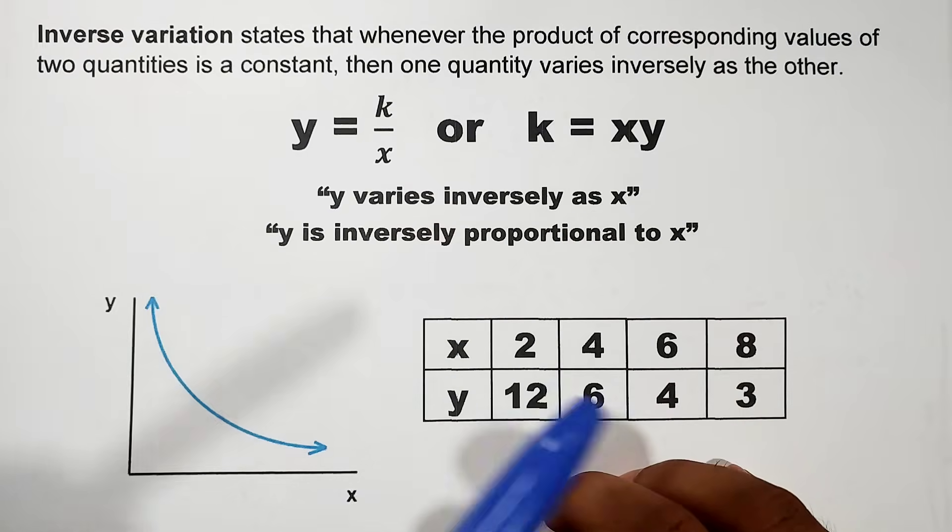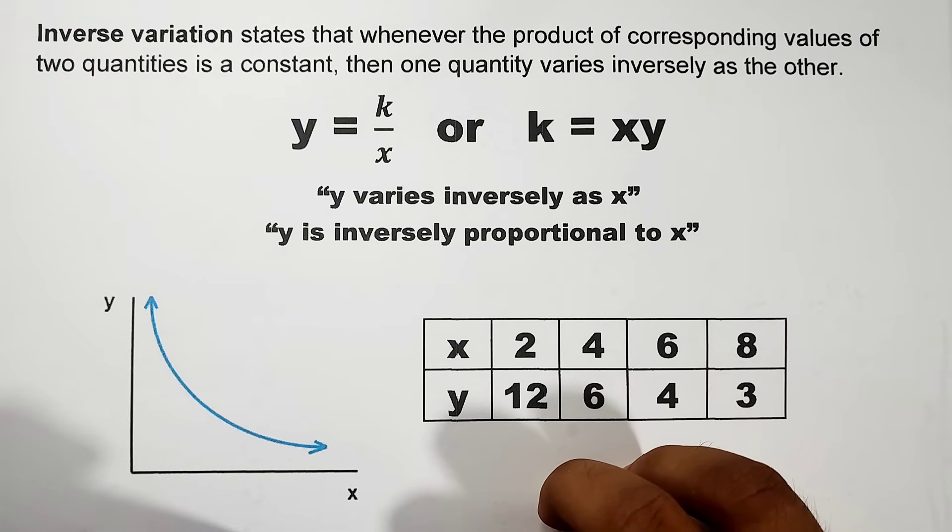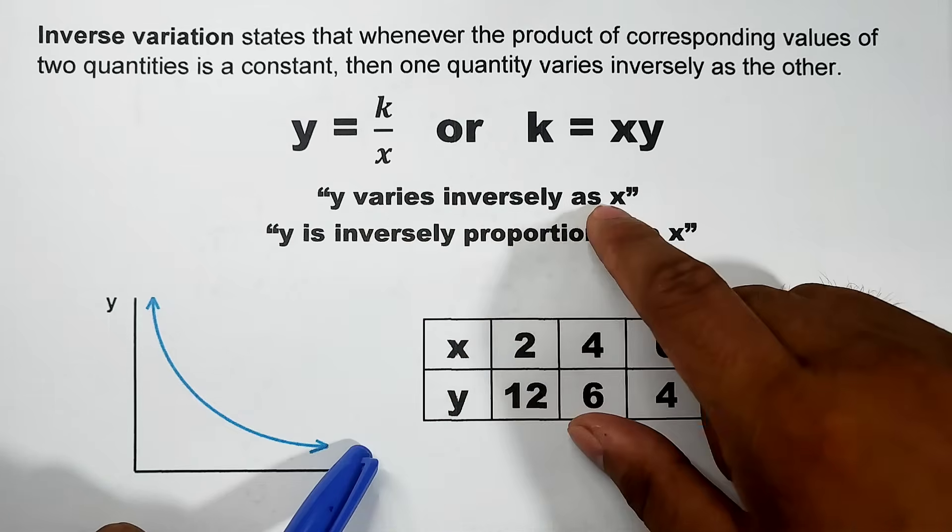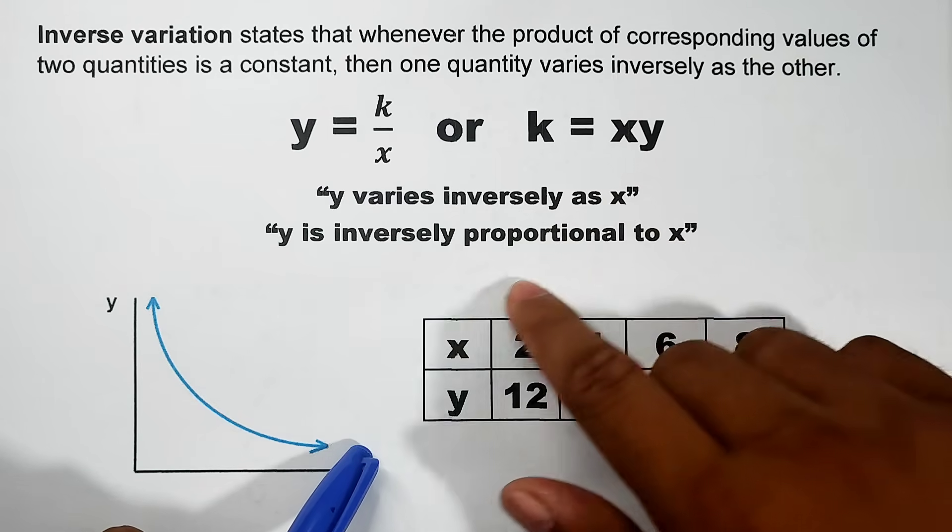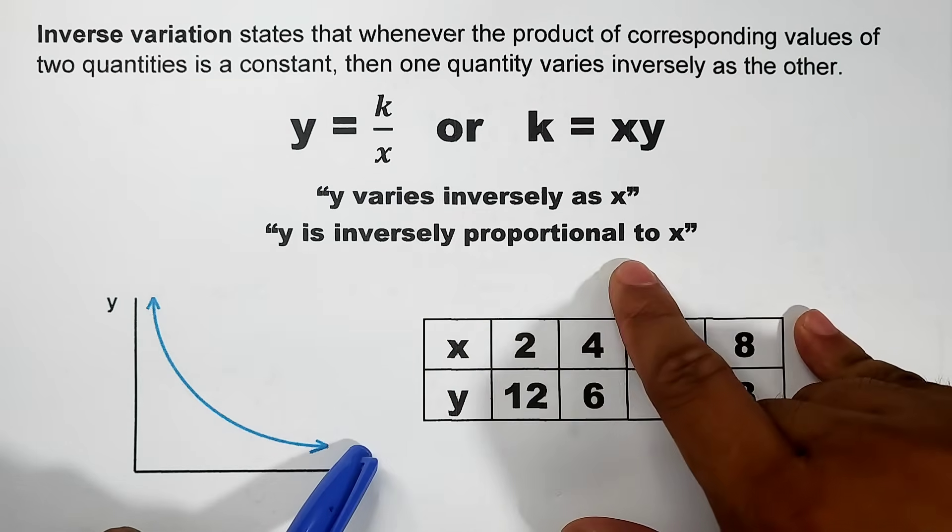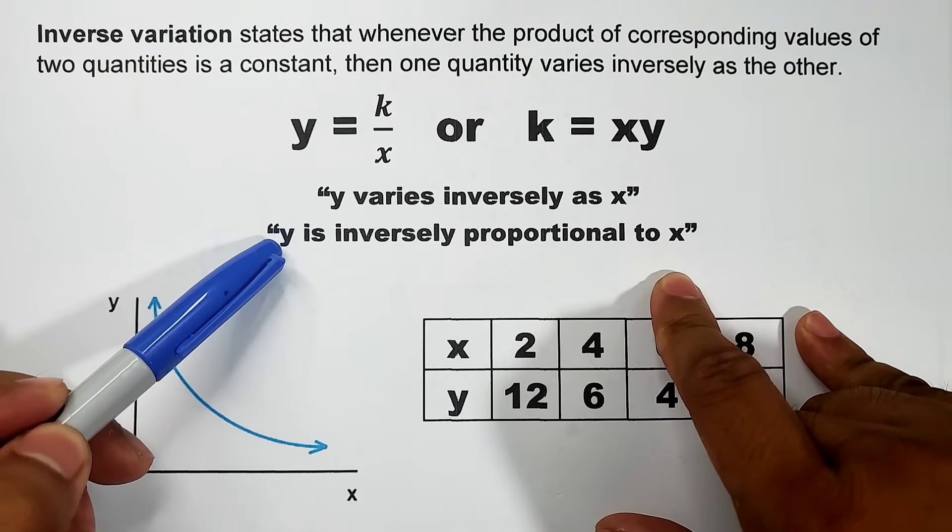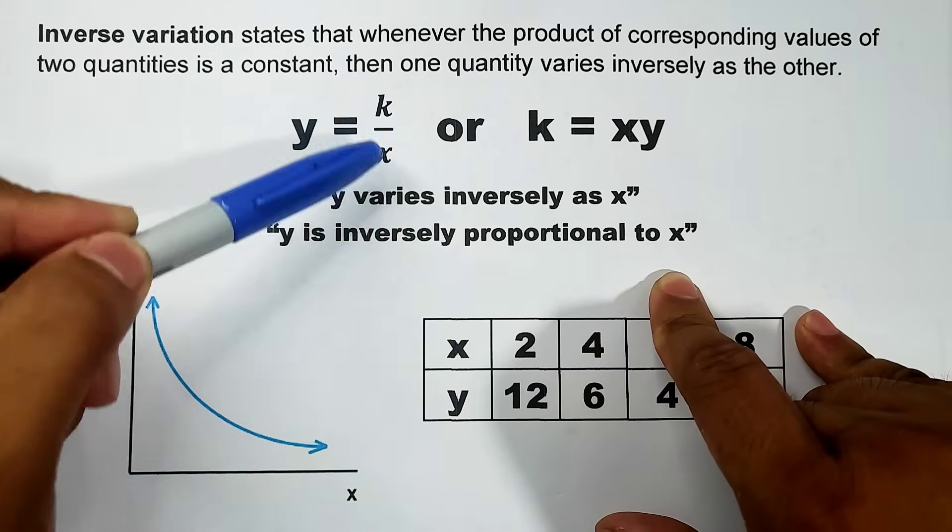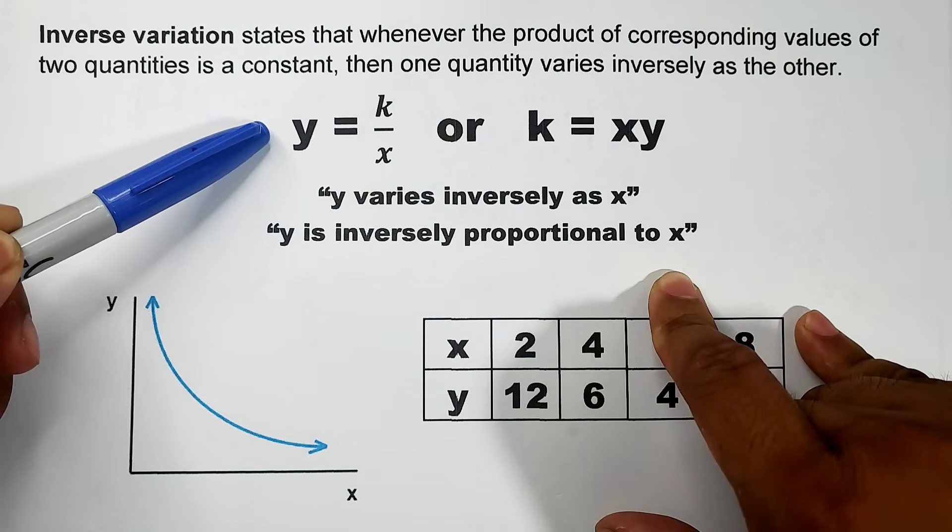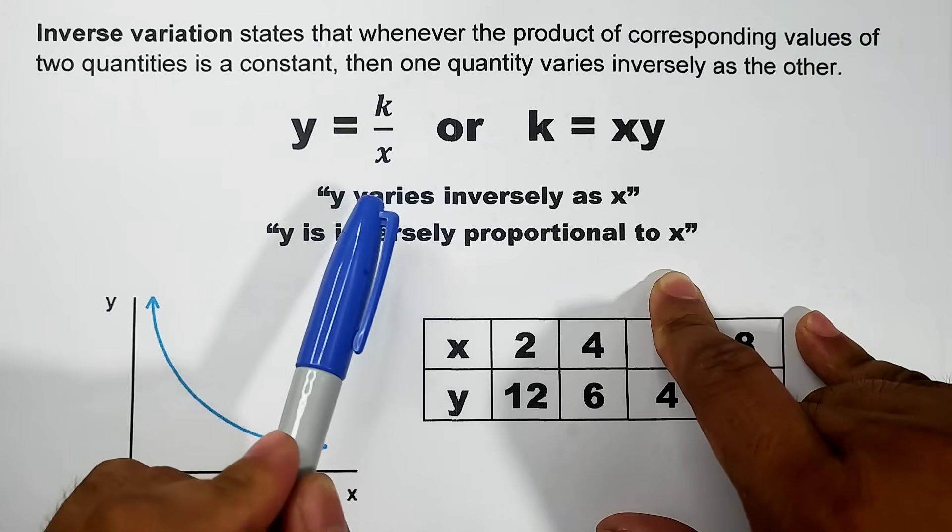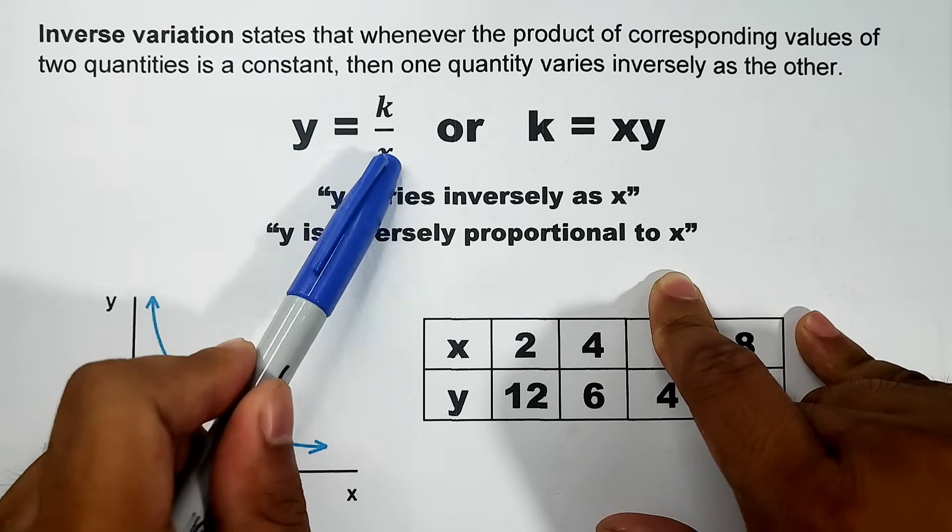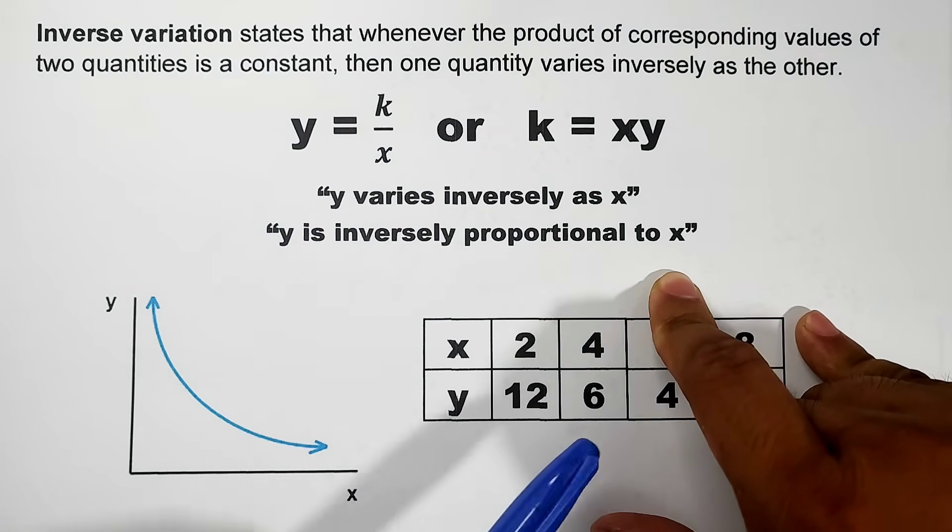Here are the formulas. Let's move on to the different statements you're going to encounter here. Y varies inversely as x. Y is inversely proportional to x. These statements are all equal to this equation or formula: y equals k over x.